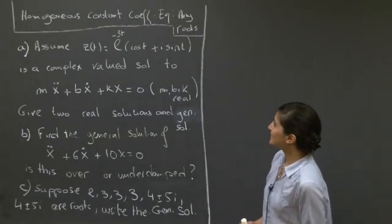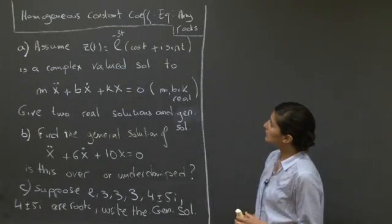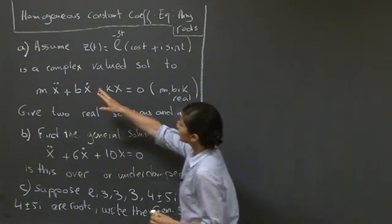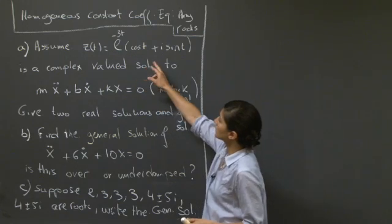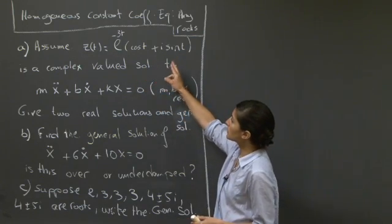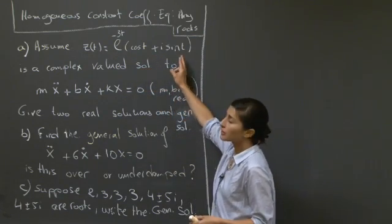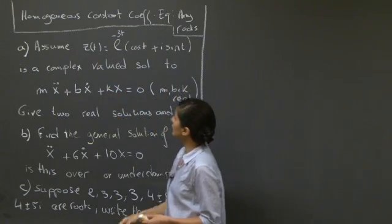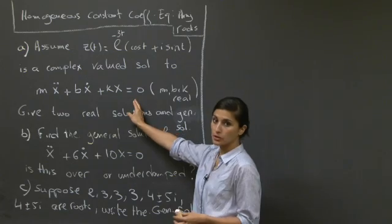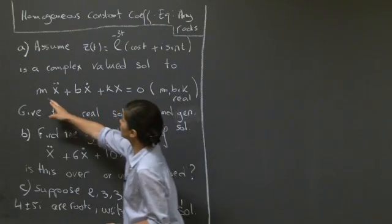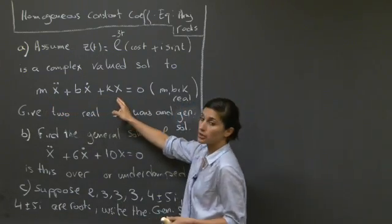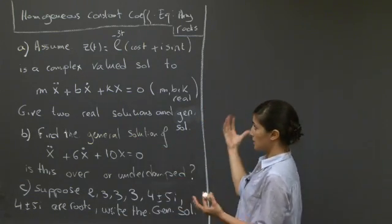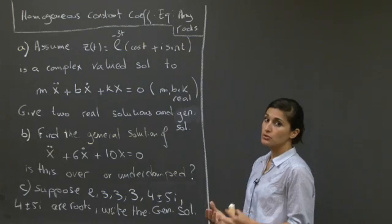Welcome back. In this session, we're going to cover homogeneous constant coefficient equations for any roots. We're told to assume that z of t is equal to exponential minus 3t times the quantity cosine plus i sine t, and to assume that this complex number is the solution to a second-order differential equation with constant coefficients m, b, and k, which are real. From this assumption, we give two real solutions to this equation.